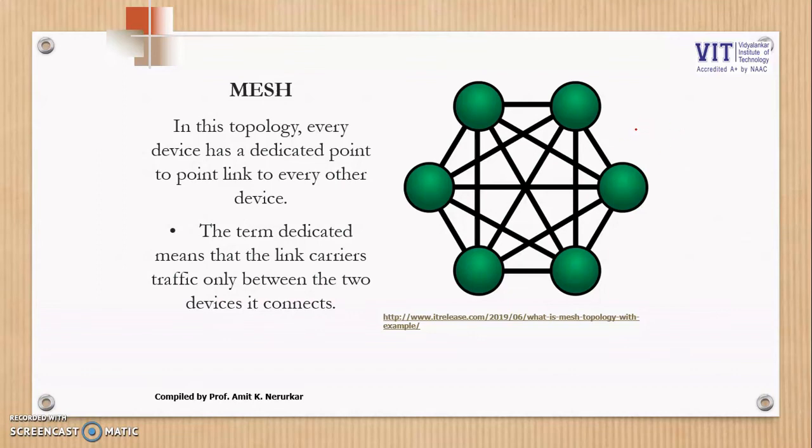The only thing is it is very costly because it requires a total of n times (n minus 1) divided by 2 number of links. So overall, it is a very costly approach, but it is a very reliable approach.